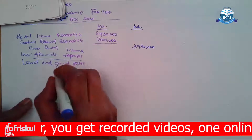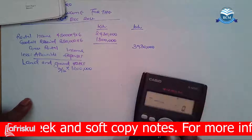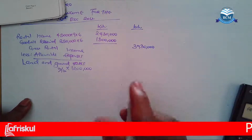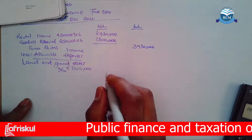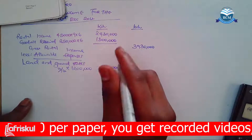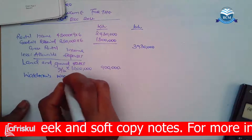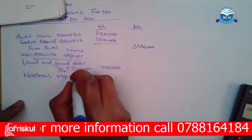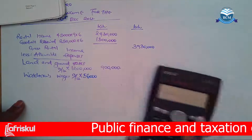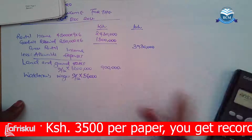So you take 9 over 12, multiply by 1.2 million. You take your calculator: 9 divided by 12, then multiply by 1.2 million, and you get 900,000. Write your 900,000. Then we have watchman's wages. We apportion also: take 9 over 12, multiply by the watchman wages of 56,000 per annum. So 9 divided by 12, multiplied by 56,000 gives 42,000.